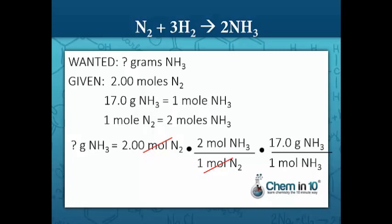We multiply the numerators together and divide by the denominators and we get 68.0 grams of ammonia in three sig figs.